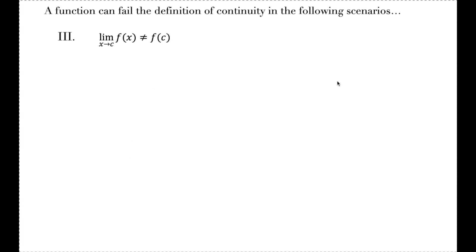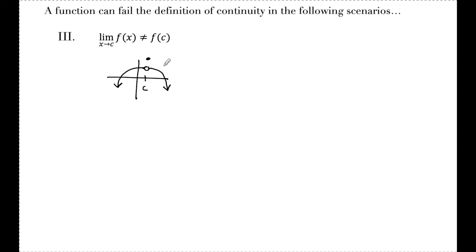The third part of the continuity definition says that the limit as x approaches c of f of x must equal f of c — the limit at c has to equal the value of the function at x equals c. There is only one way graphically that this can happen: if I have a function where the limit as x approaches c exists — I can see from the left and from the right my function is going to the same spot — and f of c does exist, but it's just defined up here. That limit and the actual value of the function are not equal to each other, so this function is not continuous, and it is failing at that third piece of the definition.